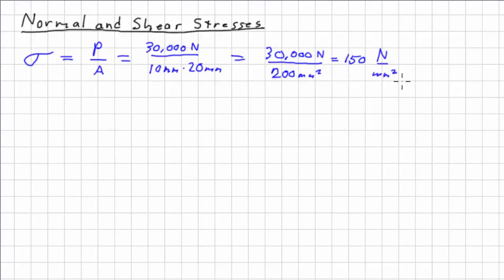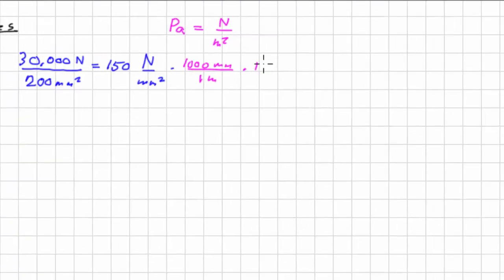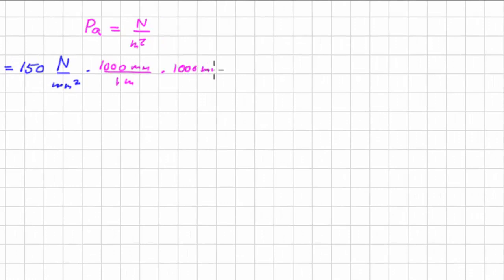We end up with newtons per square millimeter. In the SI units, the units of stress and pressure are Pascal, and a Pascal is a newton per square meter. Well, I've got newtons per square millimeter. How does that work out? Let's do a little math here. We're going to multiply by 1,000 millimeters for every 1 meter. Since this is squared, I have to do this twice, so it's going to be another 1,000 millimeters for every meter.